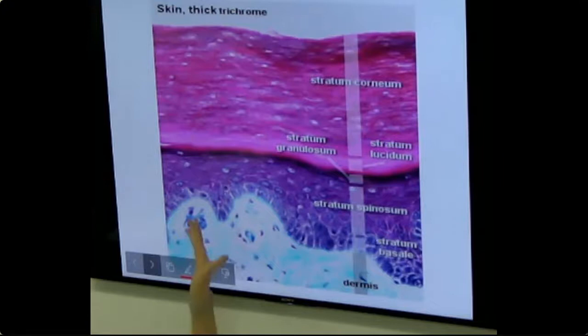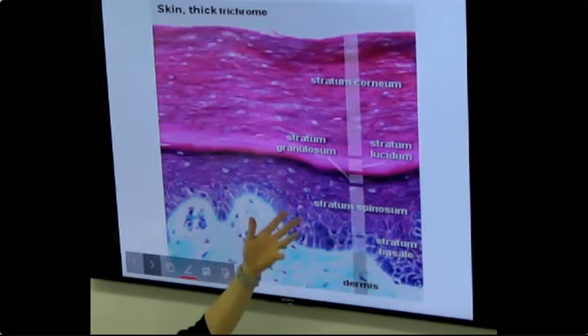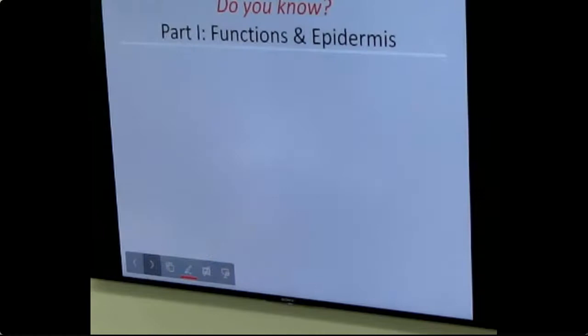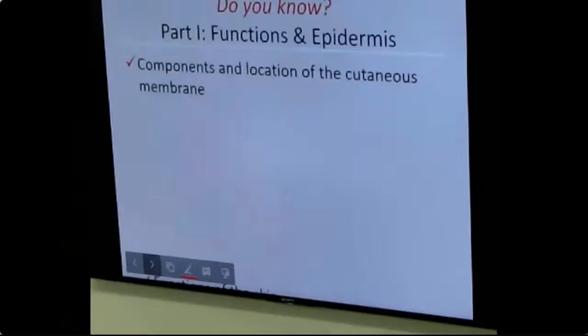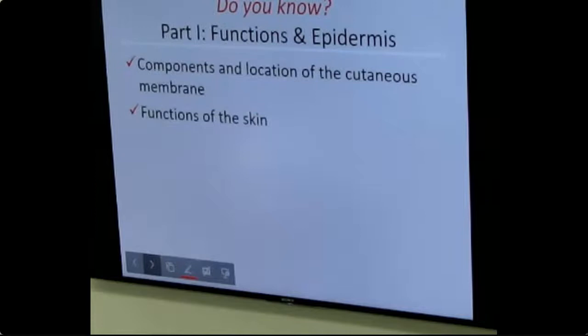A much nicer labeled slide shows the dermis below, then stratum basale as purple cells, stratum spinosum, the dark granular layer — stratum granulosum — then stratum lucidum appearing lighter, and finally stratum corneum at the top. You need to know the components and location of the cutaneous membrane: epidermis plus dermis. The epidermis side has now been covered.